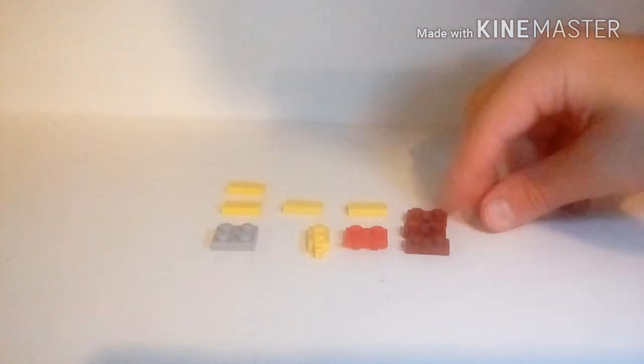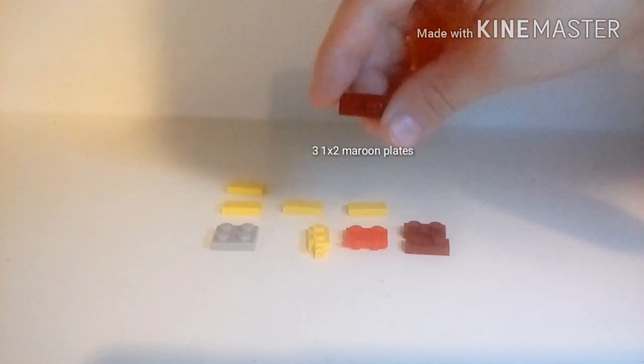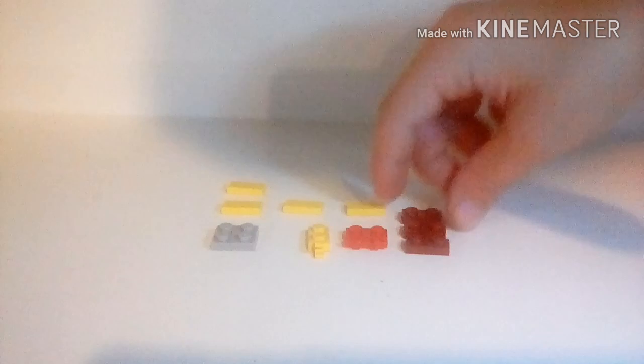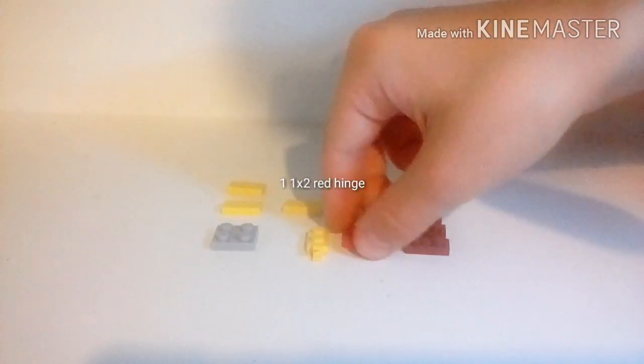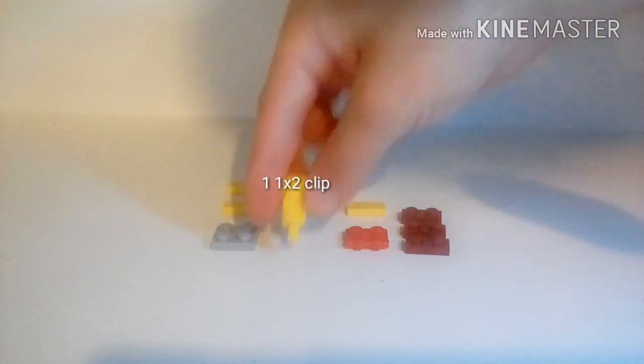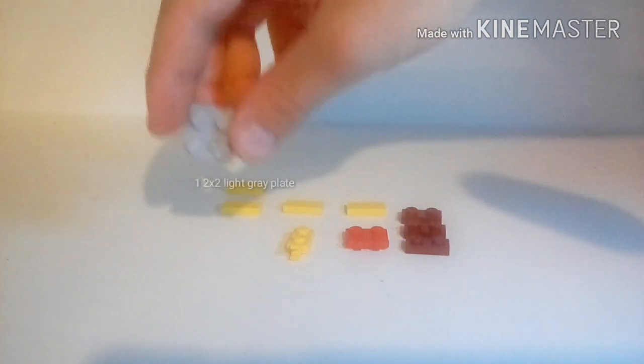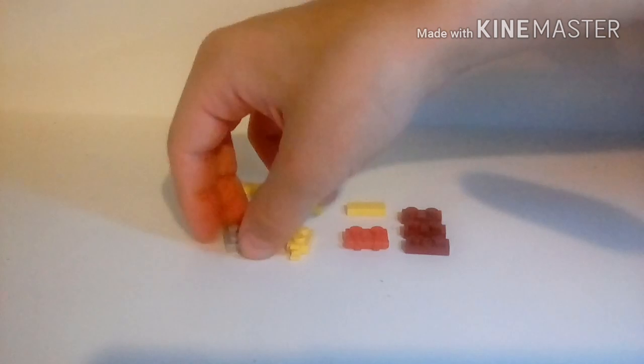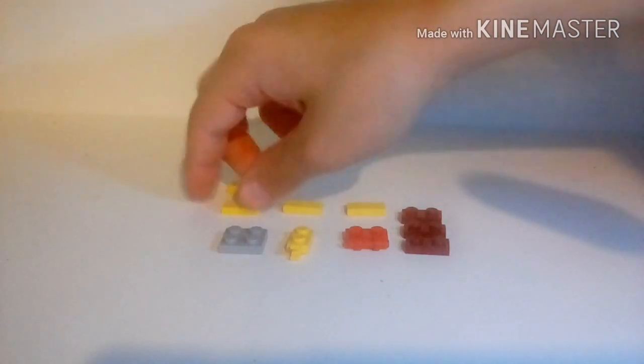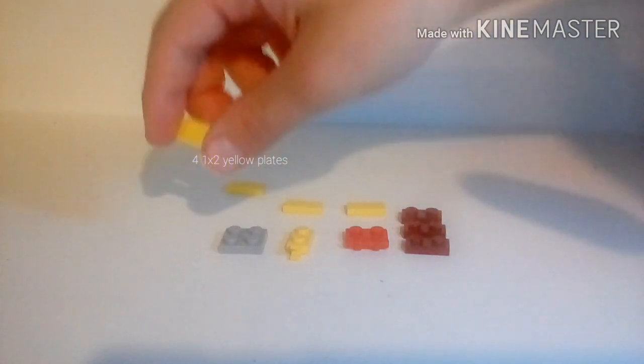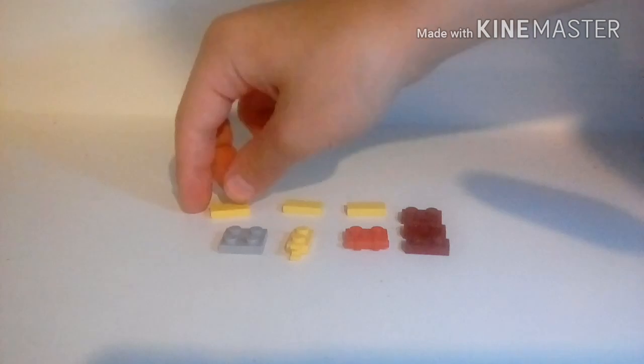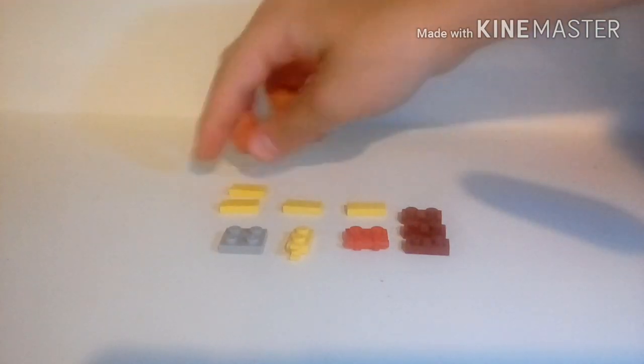Now I'm going to show you how to build the chair. Here are all the parts you need: three one by two tan colored plates, one hinge piece in red, one one by two clip in yellow, one two by two plate in light gray, and four of these one by two tiles in yellow.